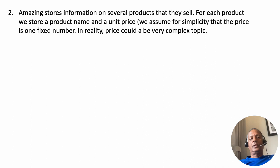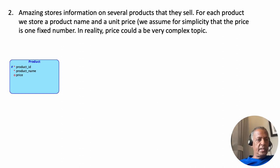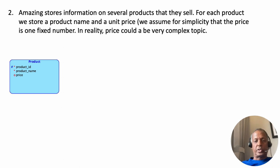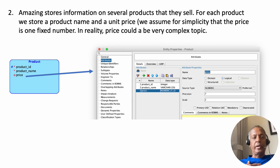Now we are looking at products. For every product we store a product name and a price, and that turns out to be an entity type with product ID, product name, and price. I've made sensible decisions about what is optional and what is required. Product ID has a primary key that would be an integer, just like what we did earlier.